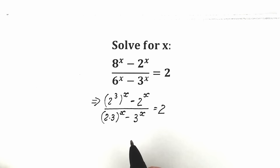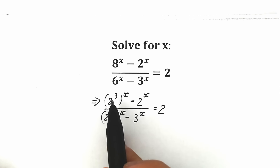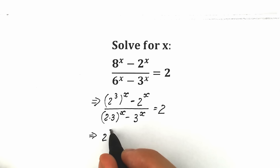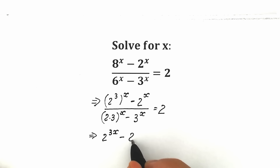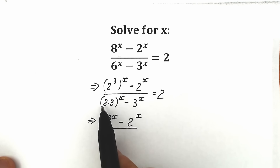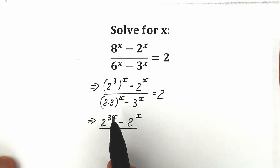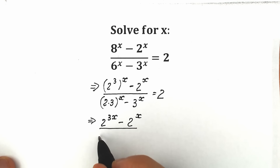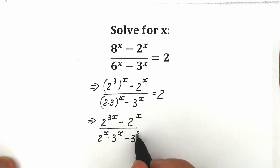Now we need to remember our power rules. When we raise 2 cubed to the power x, we multiply the powers, giving us 2^(3x). So the numerator becomes 2^(3x) minus 2^x. For the denominator, when we have a product inside parentheses raised to a power, we raise both elements to that power, giving us 2^x times 3^x, minus 3^x, equal to 2.